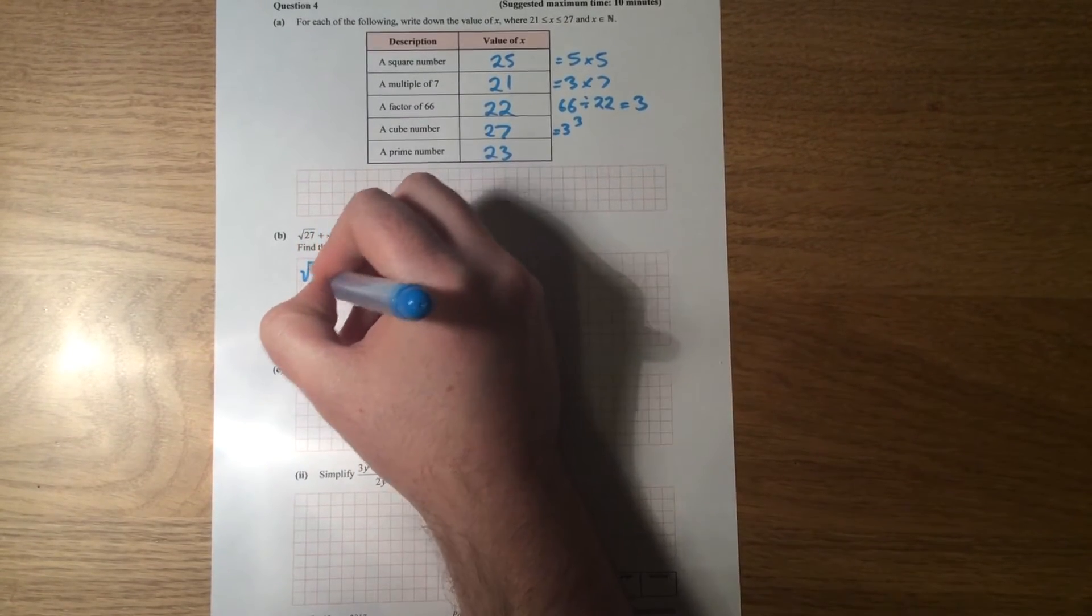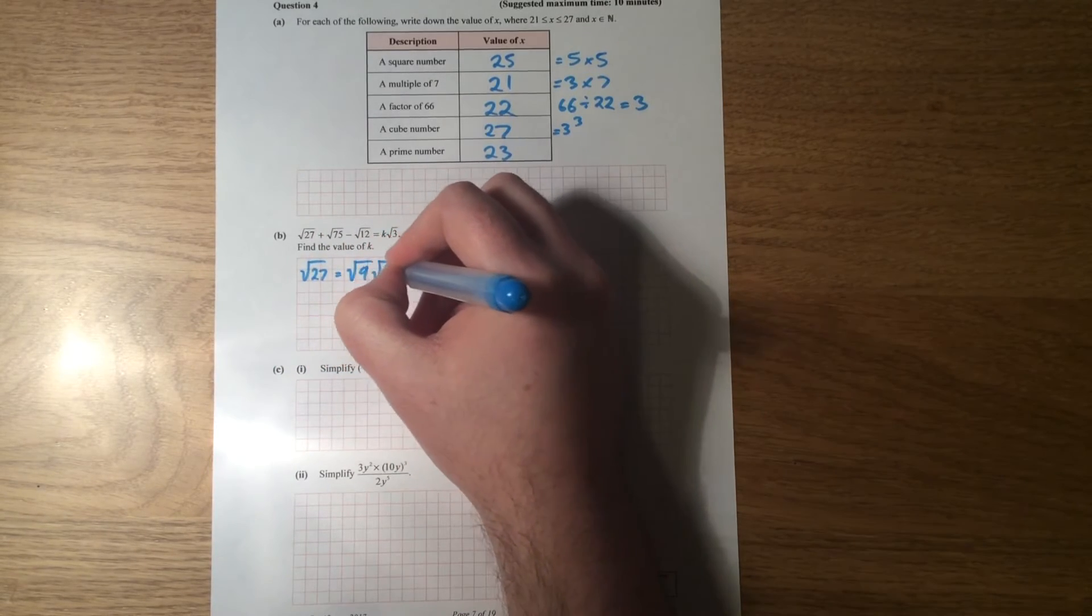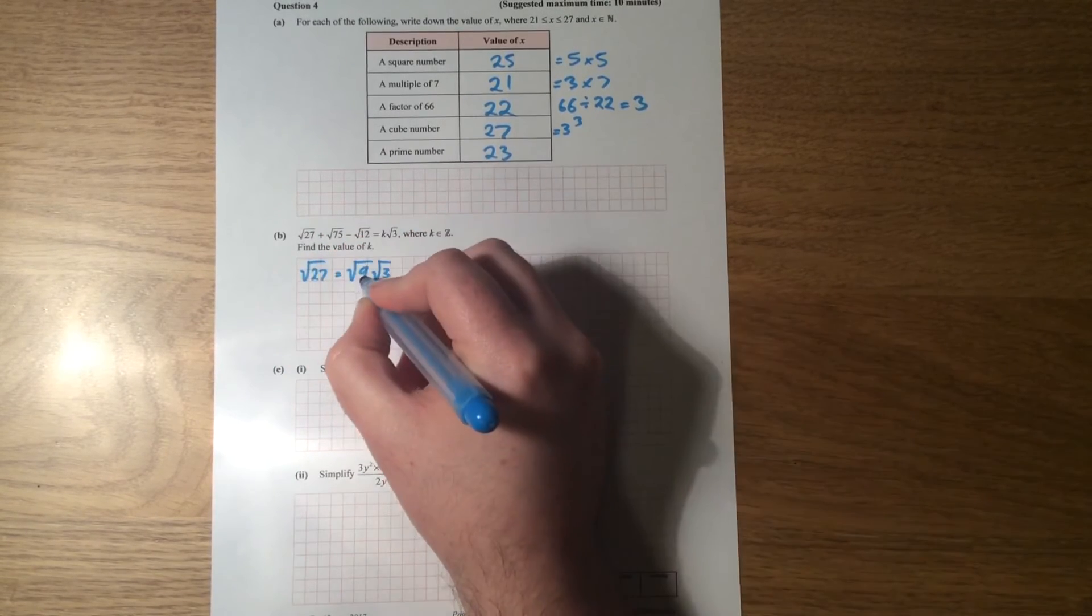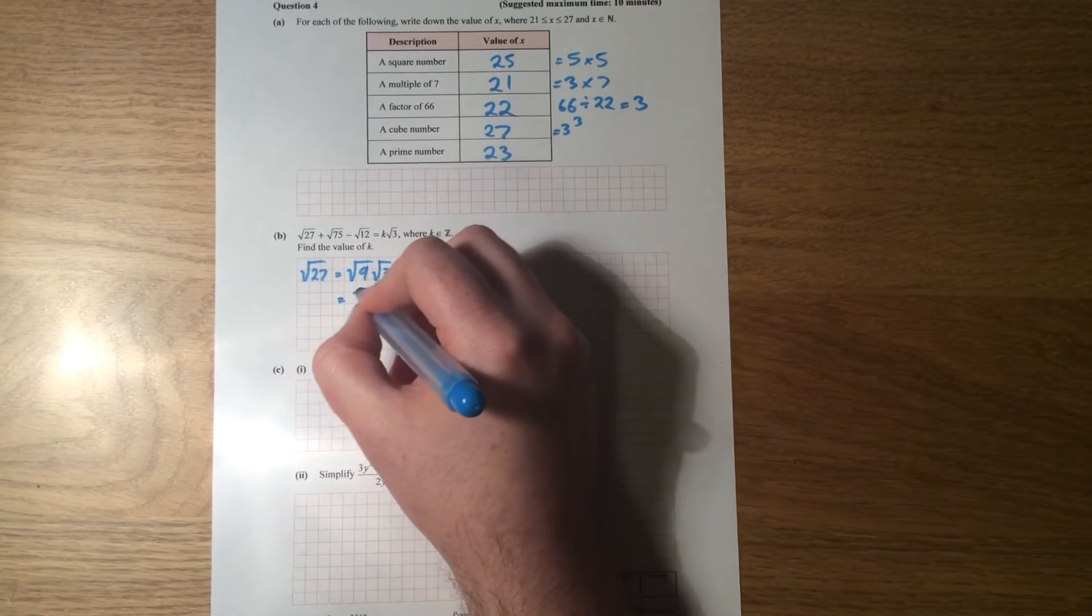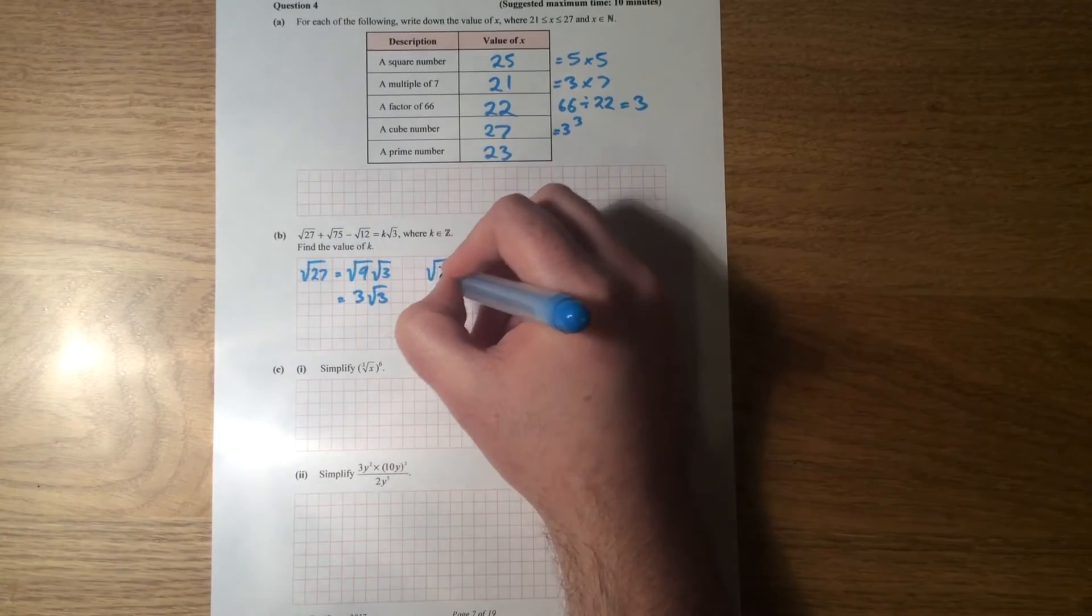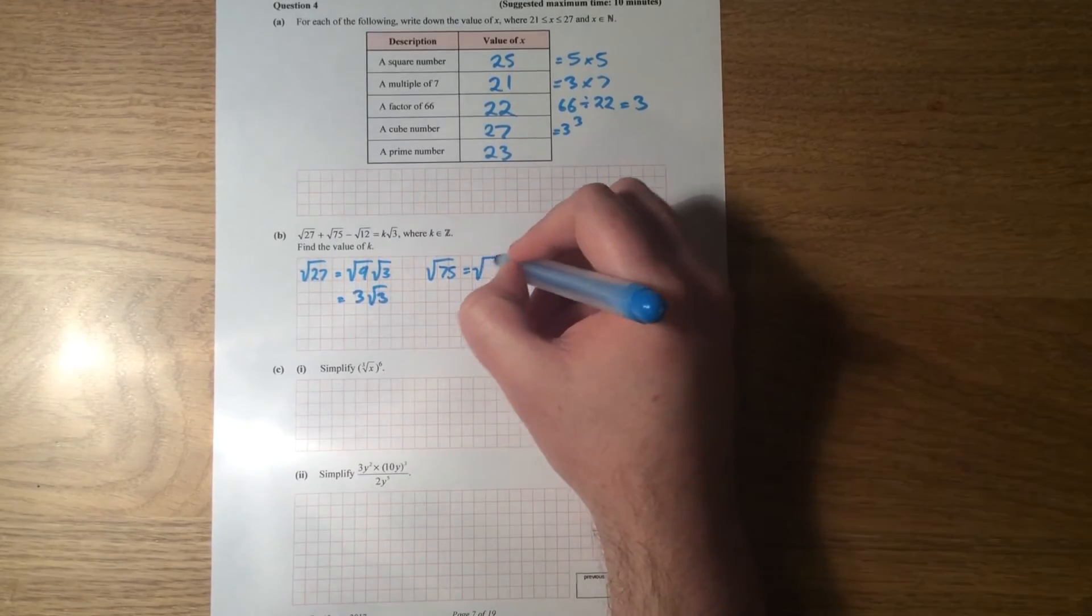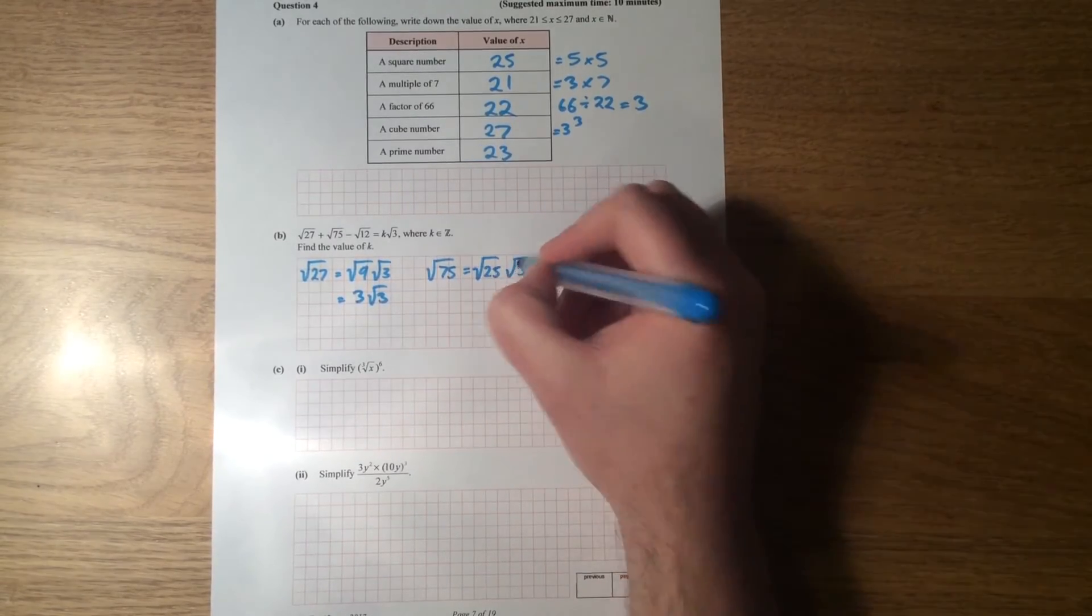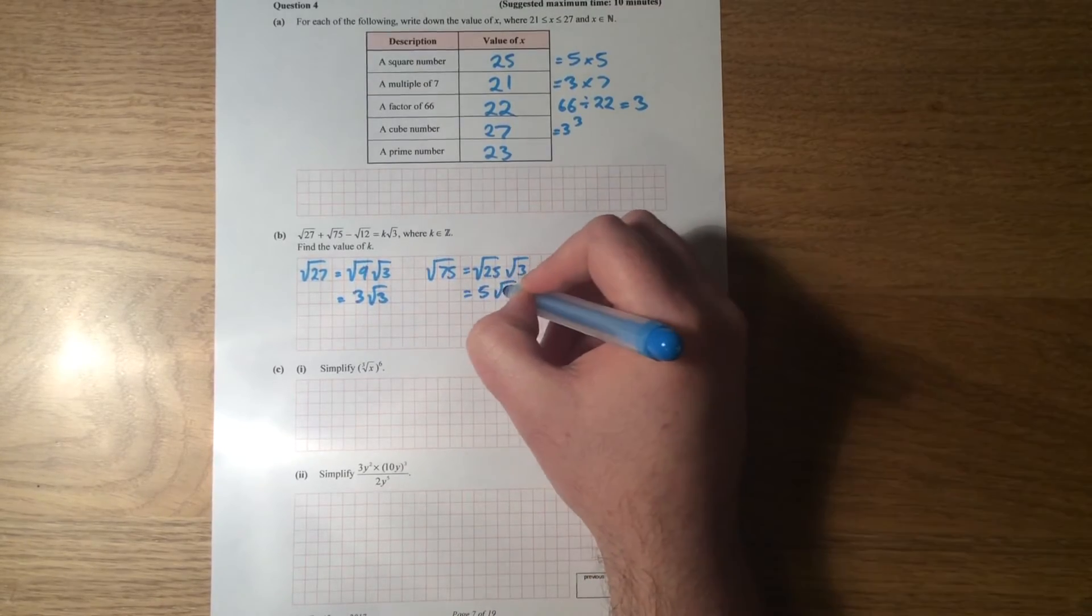So watch, let's have a look. Square root of 27 is the same as the square root of 9 multiplied by the square root of 3. 9 times 3 is 27, and 9 is a perfect square, so that can be changed to 3 root 3. Then with plus 75, all right, in this case I can go 25 and 3. So the square root of 25 and the square root of 3. And the square root of 25 is equal to 5, and the square root of 3 just stays the same.